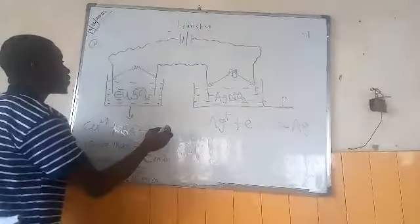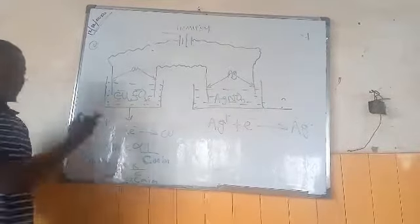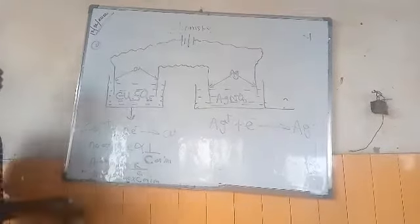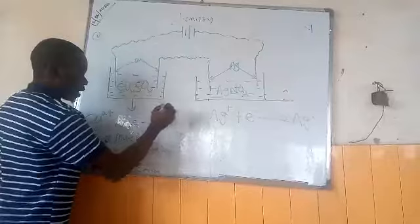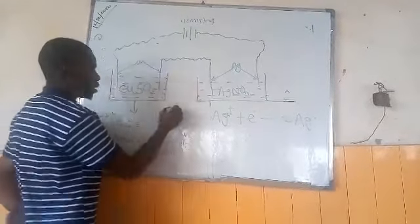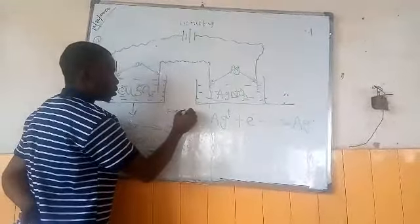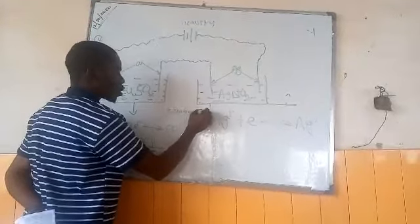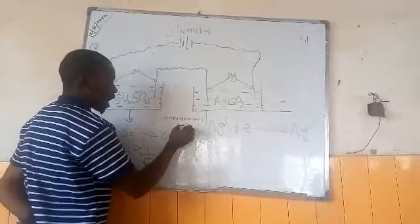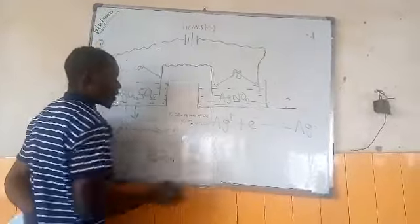So that means K is equal to number of moles of copper multiplied by charge, which is C, on copper.